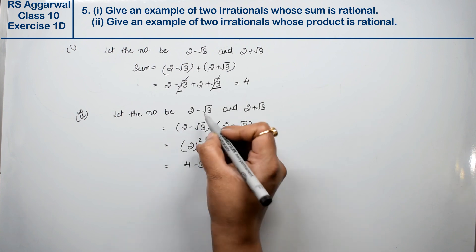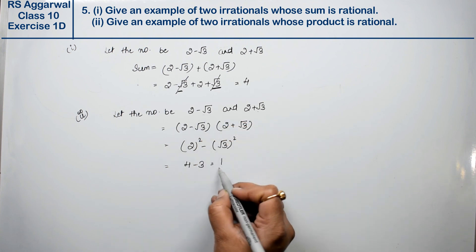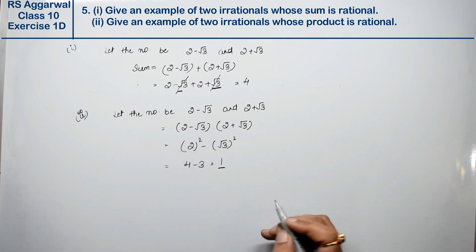And we had to show that the product of two irrationals will be rational. This is the answer.